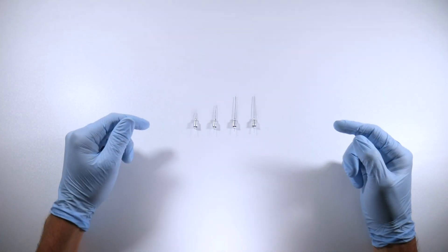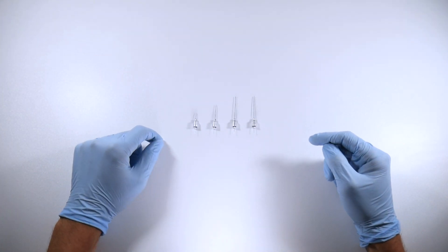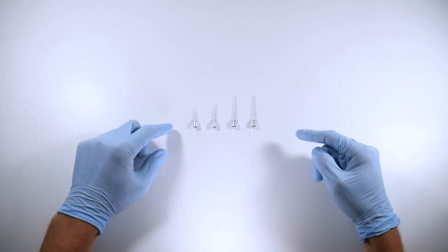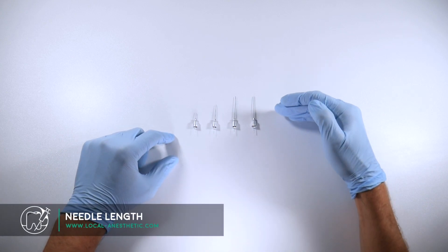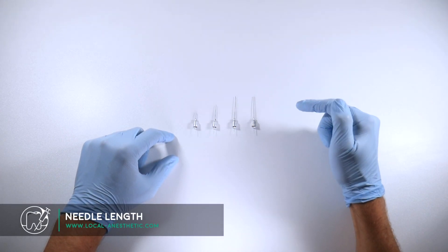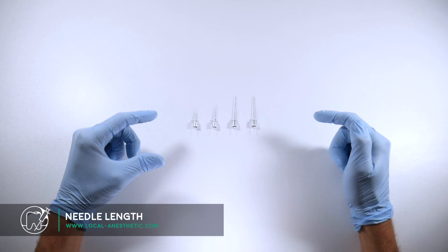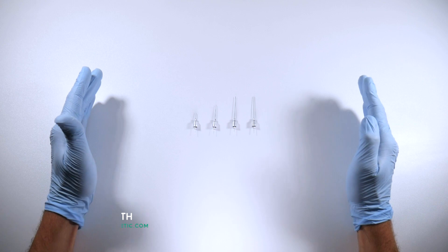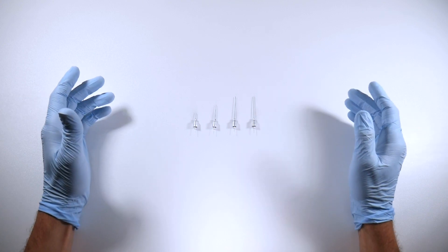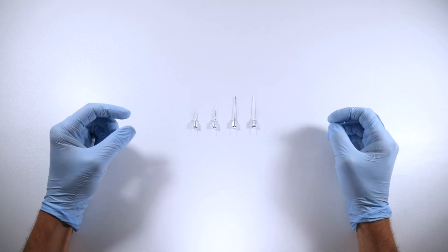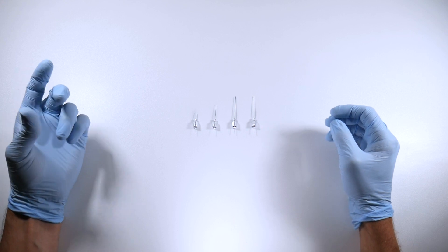One of the things we're going to want to look at with our armamentarium is the type of needle that we're using. Needles come in all different lengths, and that's specifically what this video is going to be about - the length of the needle. Some practitioners will say, 'I only use short needles, that's the only thing I use. I use the smaller gauge 30 short.'